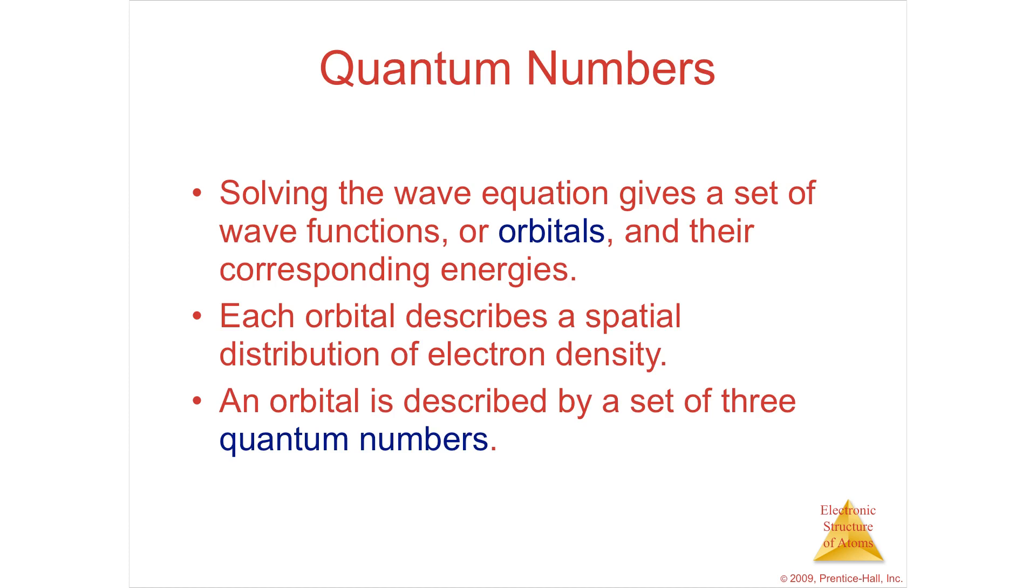Each orbital describes a spatial distribution of density, how likely are you to find that electron where. And then you simply use a computer, and then spit out dots, and then when you look at the picture, you say, it's more likely to be here than here. An orbital is described by a set of three quantum numbers. Now, this is not that hard. I think you can get it.